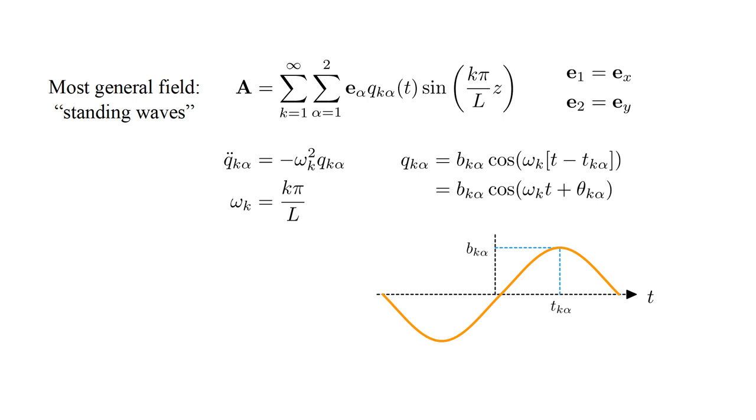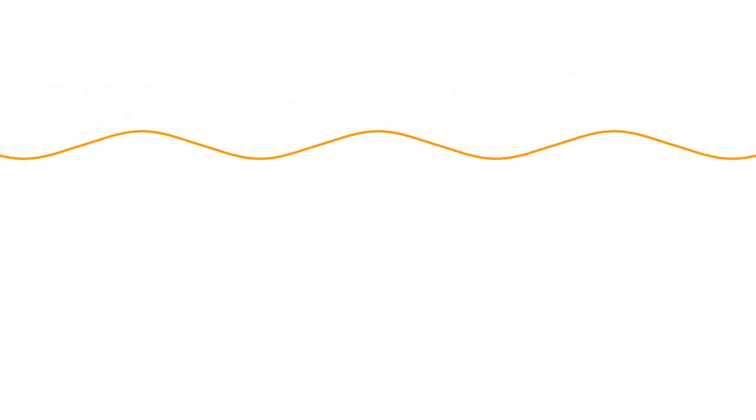A solution of this form is called a standing wave, because the sinusoidal variation in space remains fixed, and merely oscillates in amplitude.